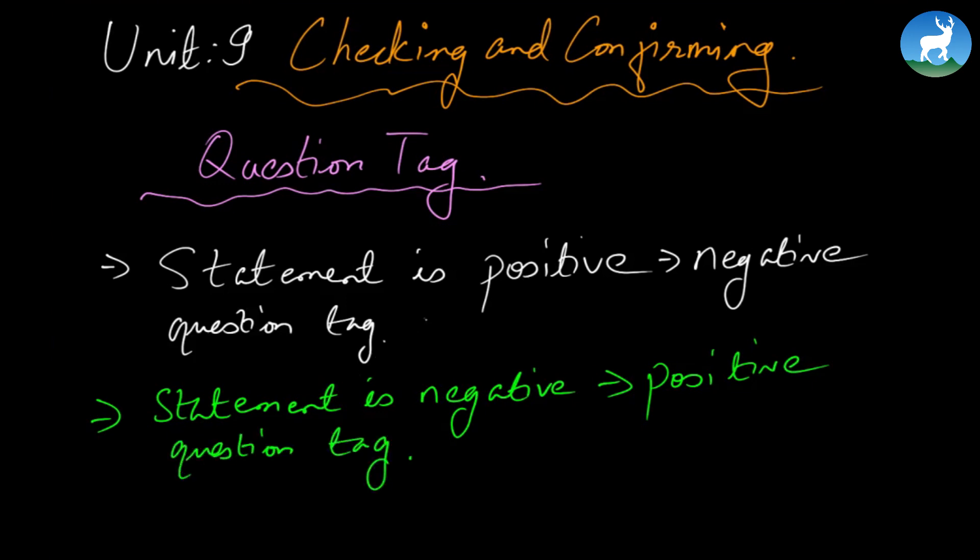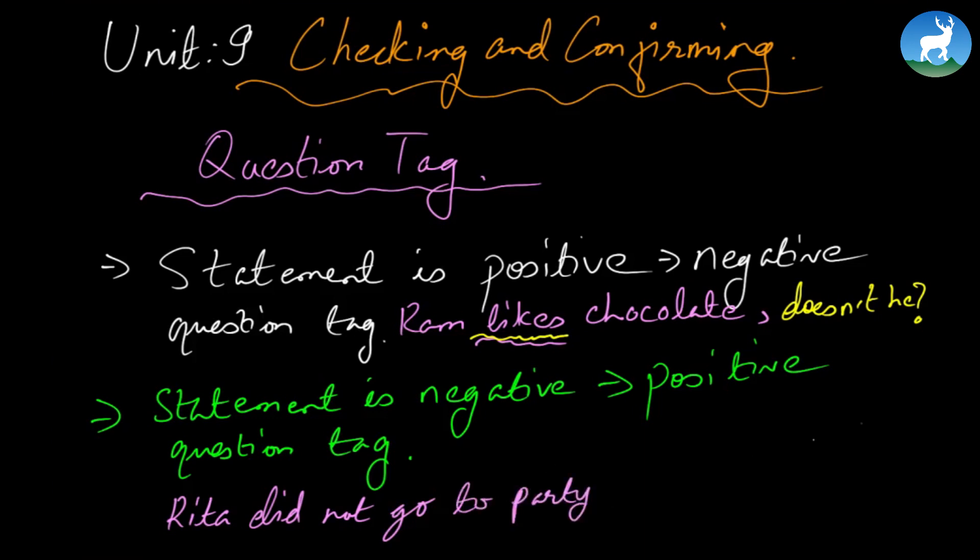For example, let's say Ram likes chocolate. It's always separated by a comma after a statement. It's a positive statement, so it will have a negative question tag. We're taking care of the verb here and the tense, it's simple present. So doesn't he? Ram likes chocolate, doesn't he? Here, let's say Rita did not go to party, separated by a comma. Because it's simple past, did not, and it's a negative statement, that's why positive question tag, did she?